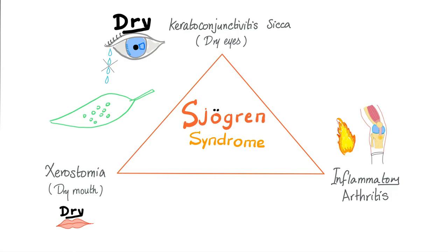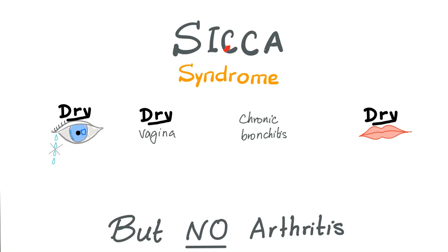Arthritis in Sjögren is an inflammatory arthritis — ESR and CRP can be elevated. That was Sjögren. How about Sicca syndrome? Sicca syndrome is not a triad — it's just a dyad: dry eyes and dry mouth. That's it. There is no arthritis. You can also add dry vagina and chronic bronchitis — the same features found in Sjögren syndrome. But what distinguishes Sjögren from Sicca syndrome is that Sjögren has arthritis; Sicca does not.